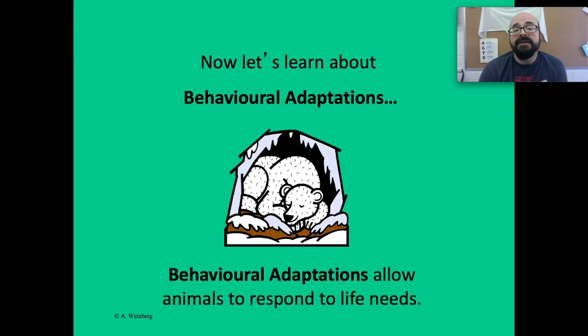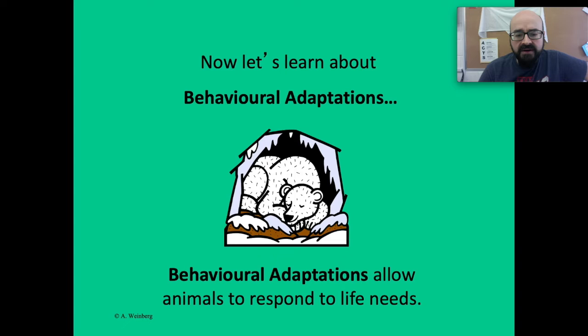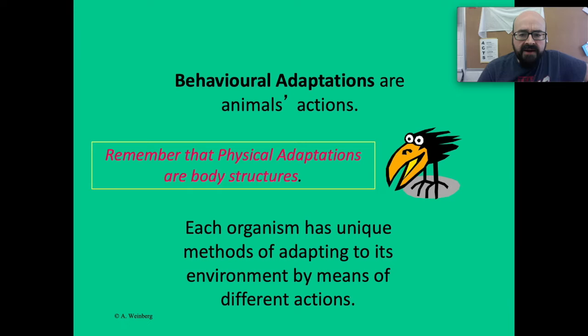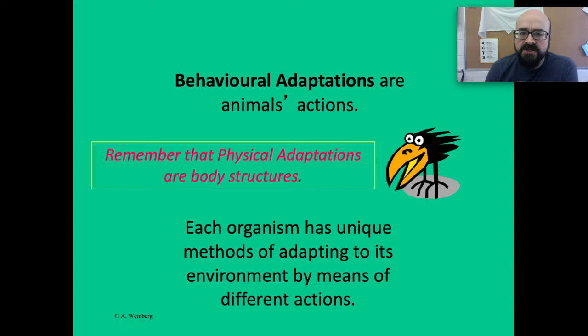Now let's look at behavioral adaptations. The root word is 'behavior' — how you act. Behavioral adaptations allow animals to respond to life needs. There's a picture here of a cute little bear hibernating. Behavioral adaptations are animals' actions, whereas physical adaptations are body structures. Each organism has unique methods of adapting to its environment through different actions, not physical body structures.